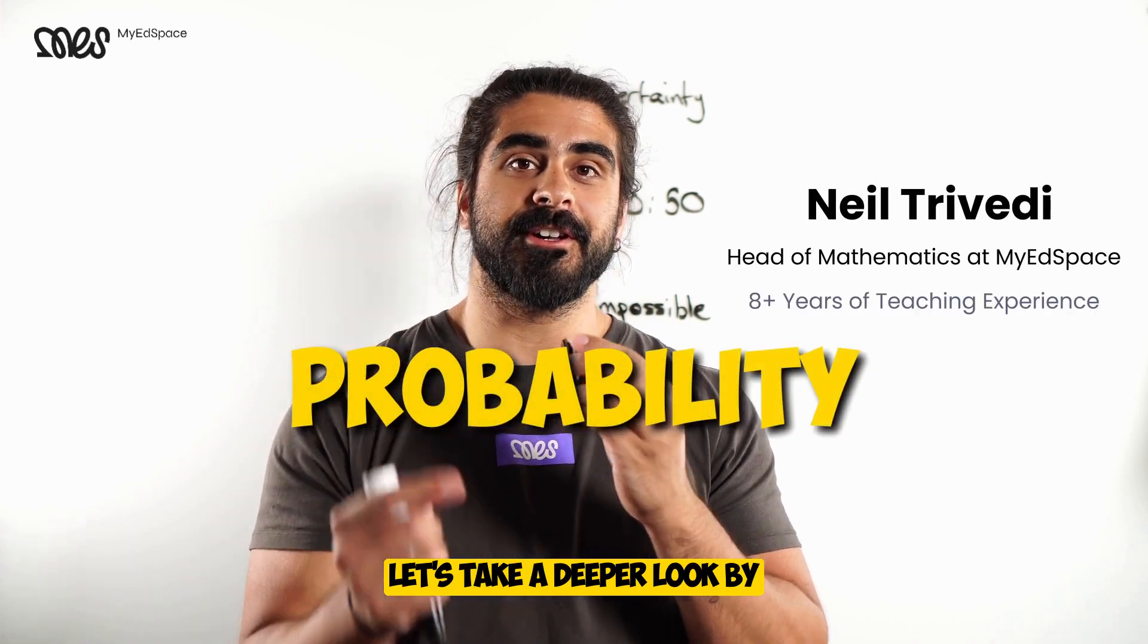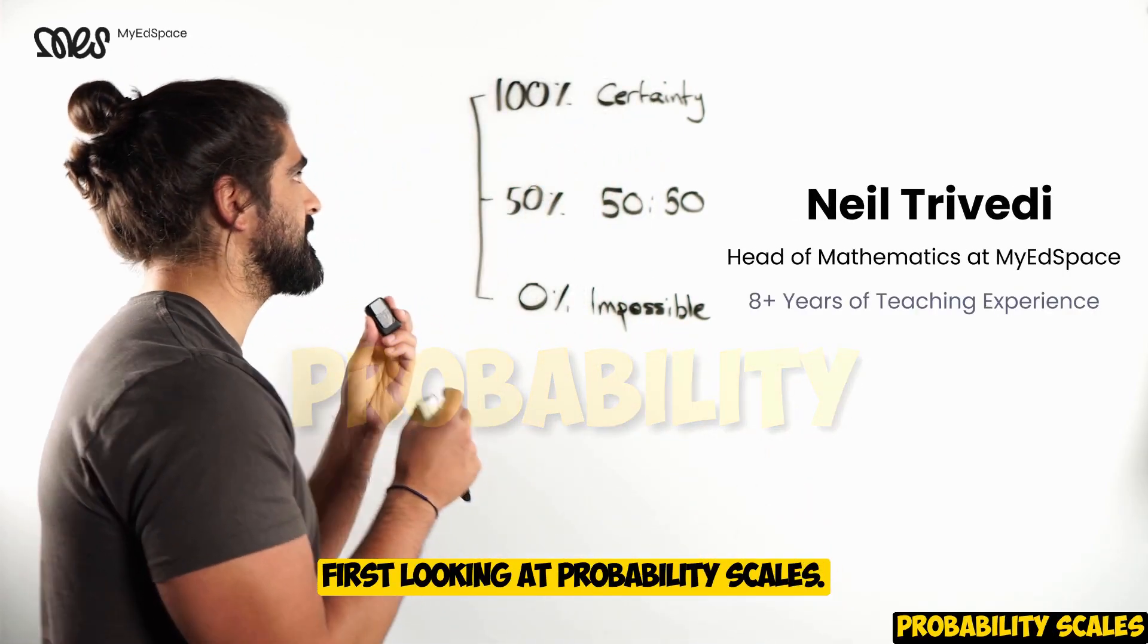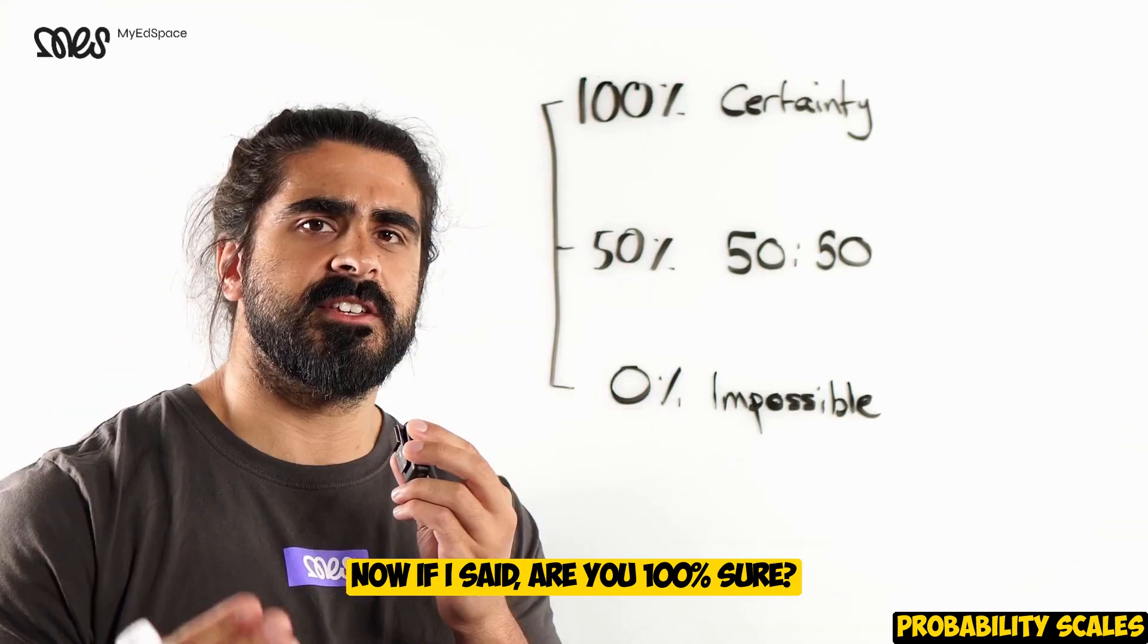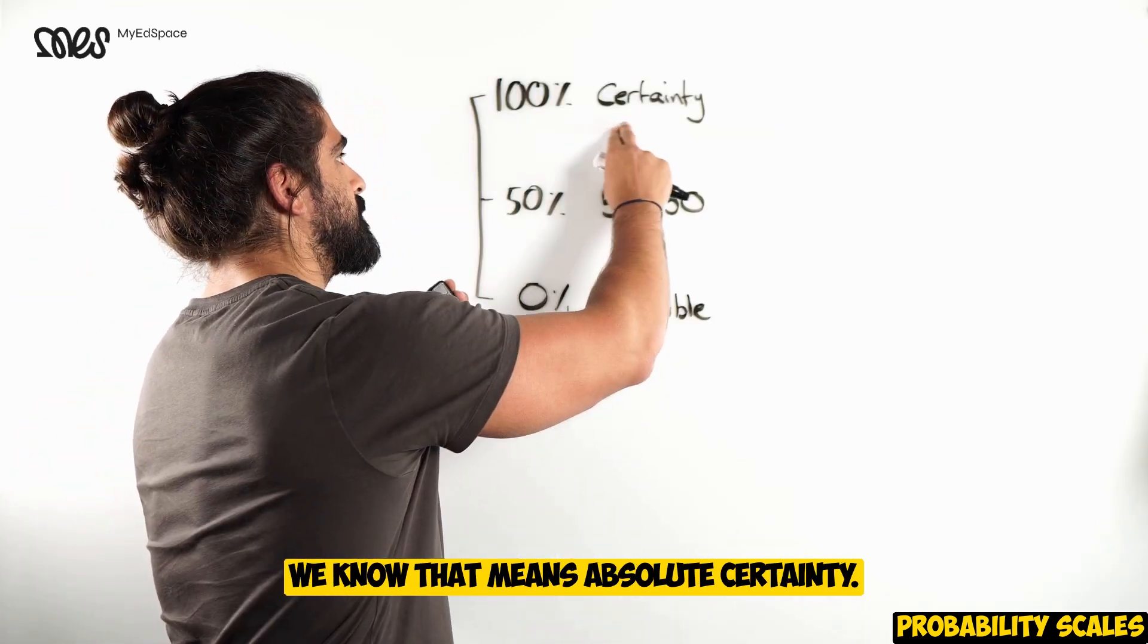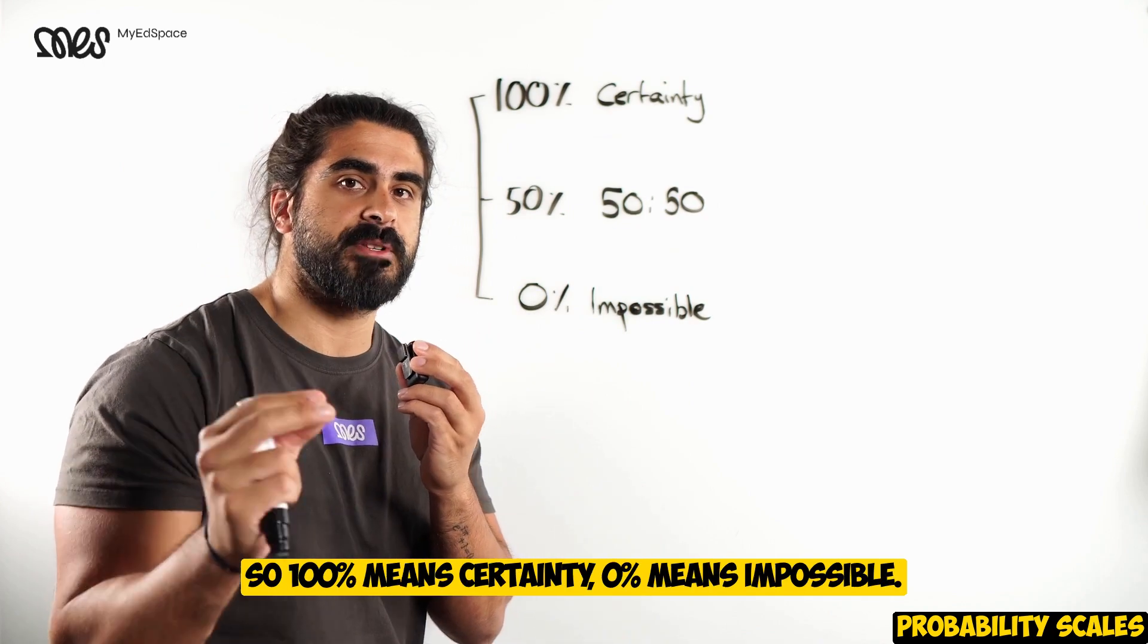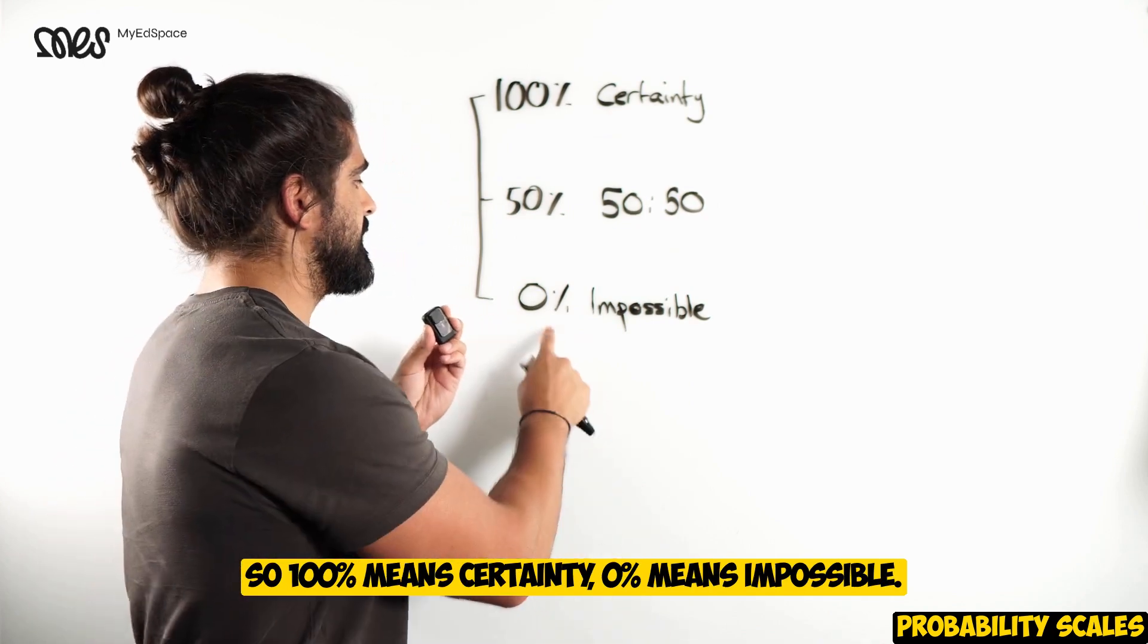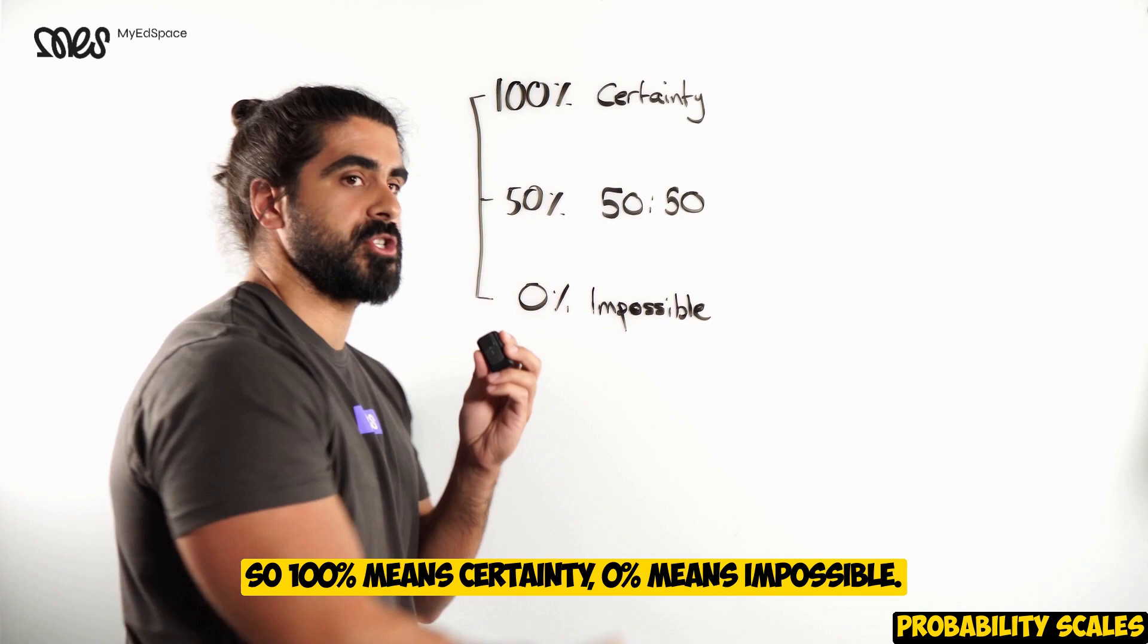Probability. Let's take a deeper look by first looking at probability scales. If I said, are you 100% sure? We know that means absolute certainty. So 100% means certainty. 0% means impossible. There's no chance it can happen.